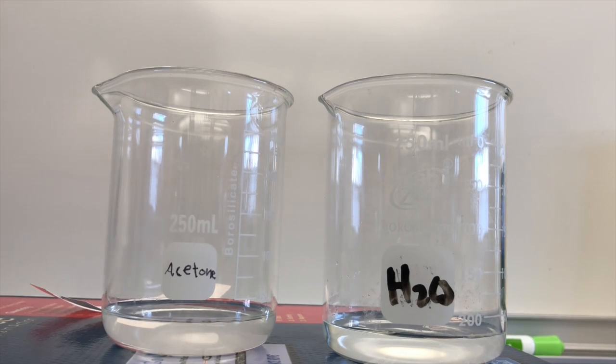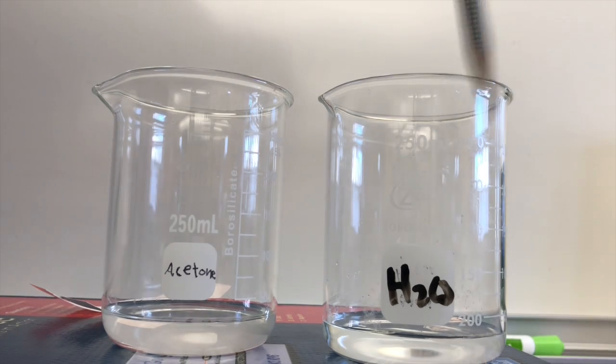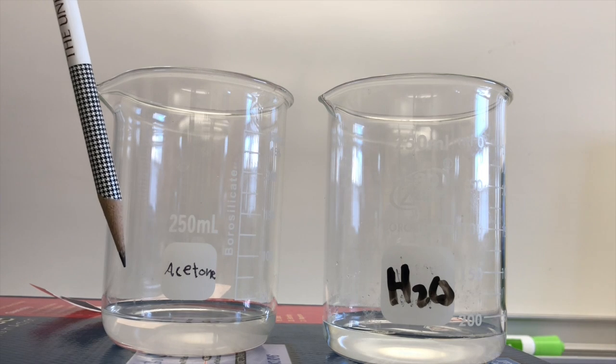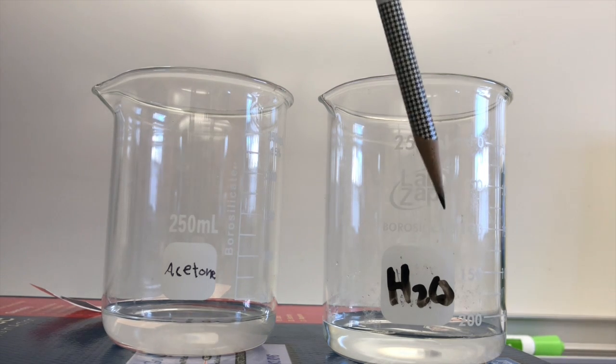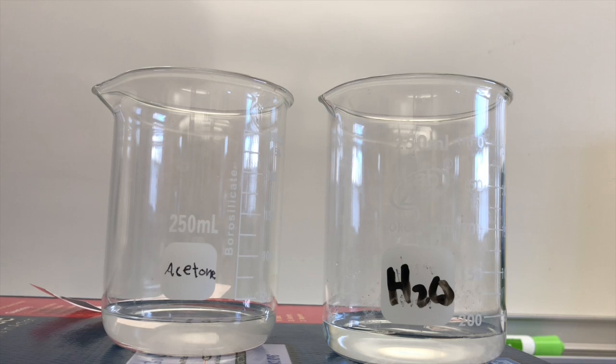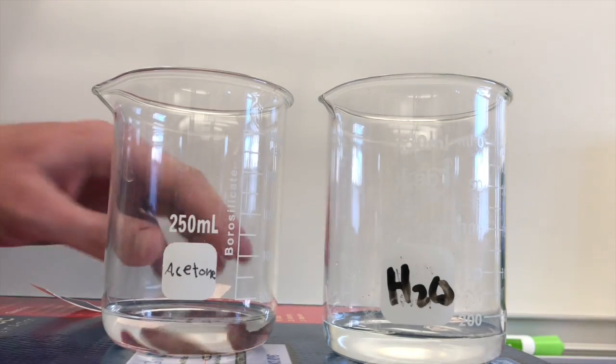Okay so what we have here is acetone and water. Acetone is a non-polar liquid. Water is a polar liquid that has to do with the shapes of the molecules and how well they are sharing the electrons or unequally sharing electrons.